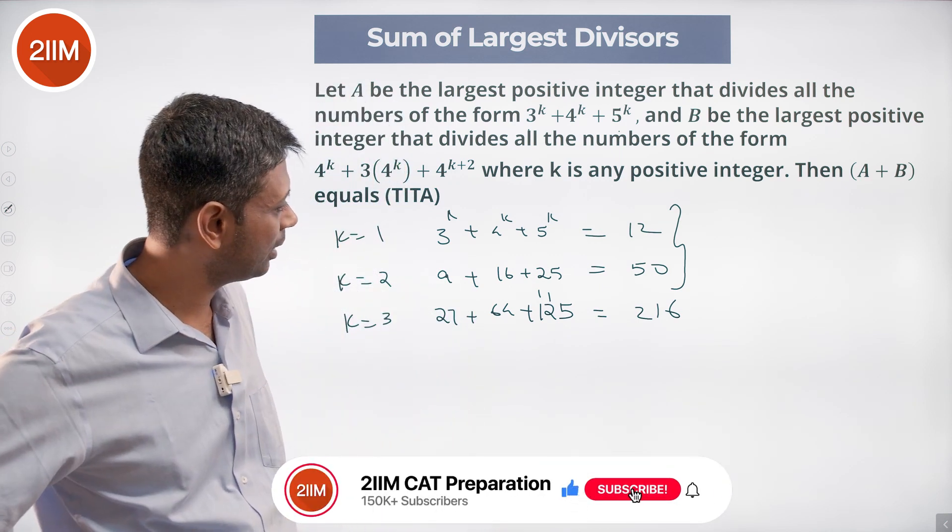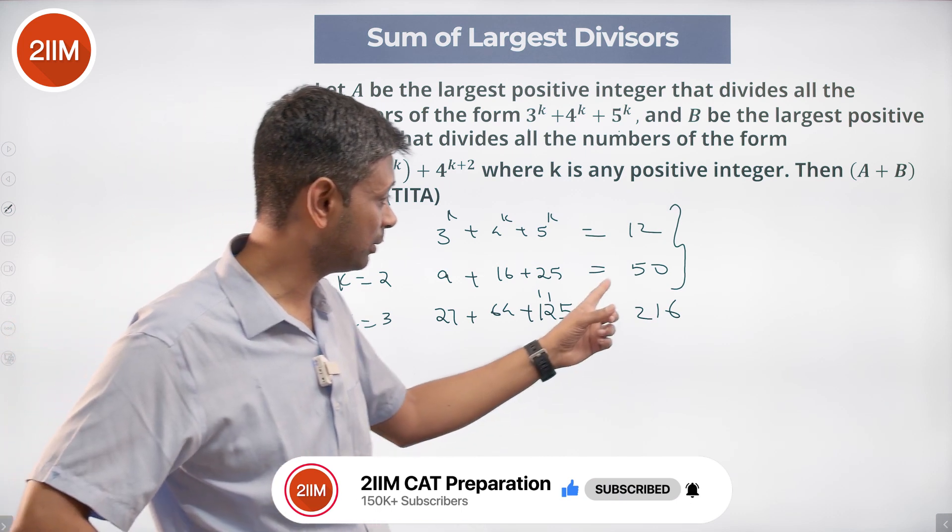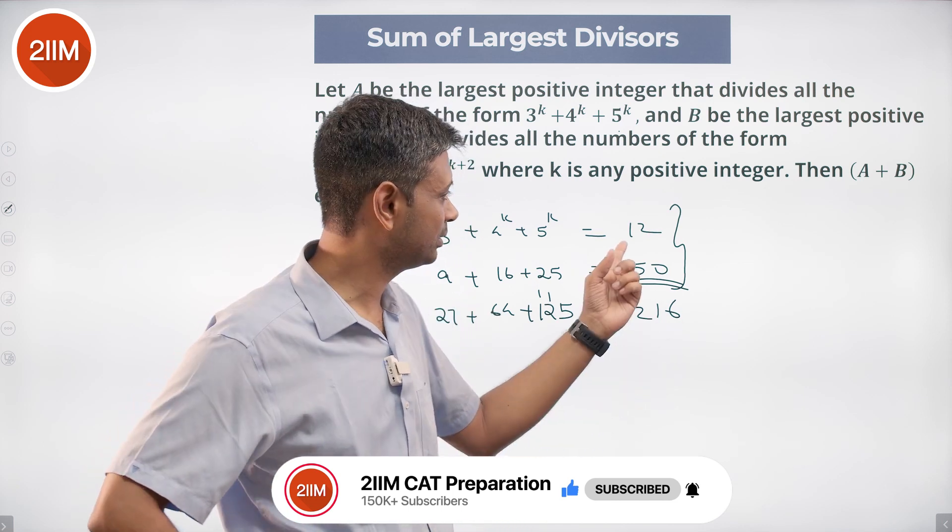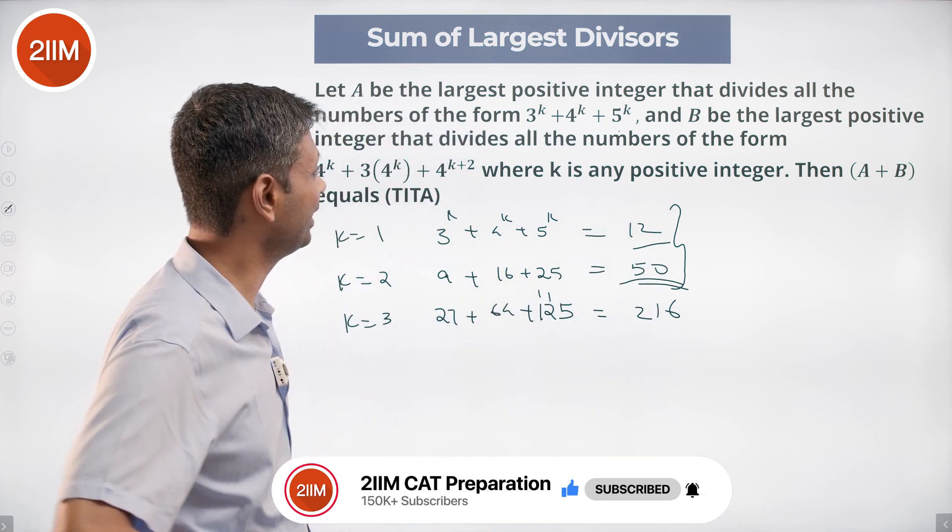So A, anything more than 2 is not possible, 4 is not possible, not a multiple of 4, 6 is not possible, not a multiple of 6, out. Anything else does not divide this. So beautiful. So A is 2.